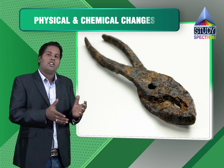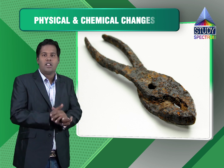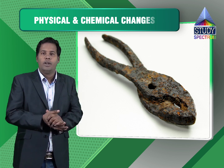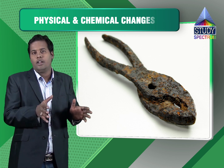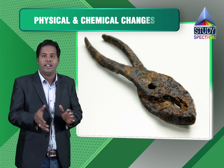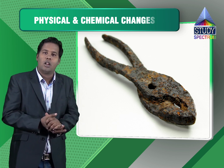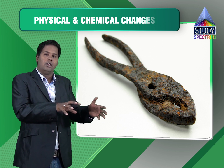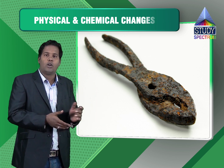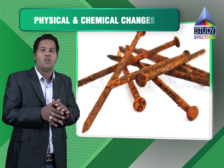Now if we talk about rusting of iron — what is rusting and what is corrosion? Whenever a metal comes in contact with a humid environment like oxygen and water, they always form metal oxides. When a metal forms metal oxide, the process is called corrosion. But when iron forms iron oxide when it comes into contact with oxygen, that particular corrosion is also called rusting of iron.